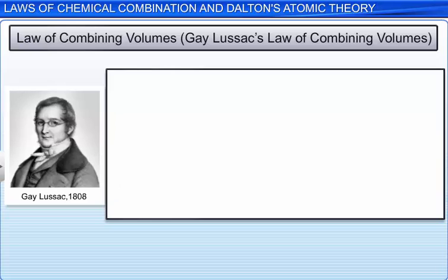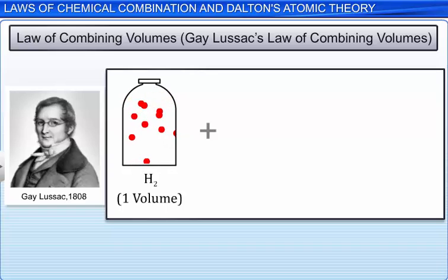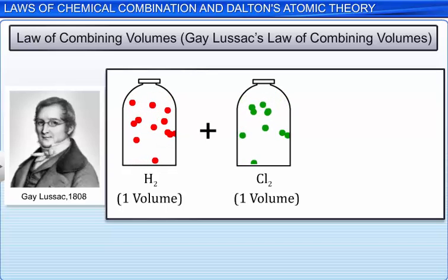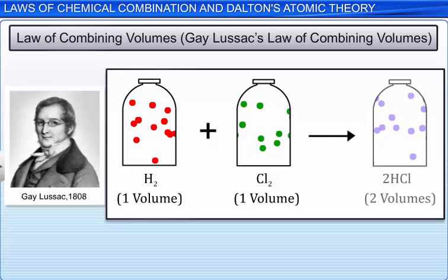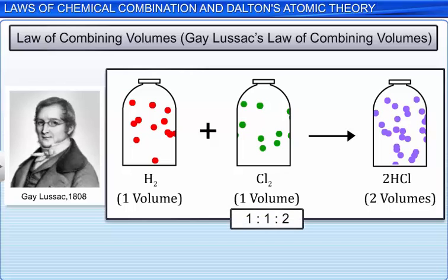For example, when one volume of hydrogen reacts with one volume of chlorine, the result is always two volumes of hydrogen chloride. Thus, the ratio of volumes of reactants and products of this reaction is simple.